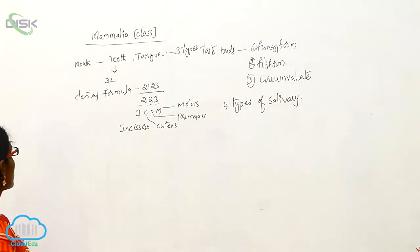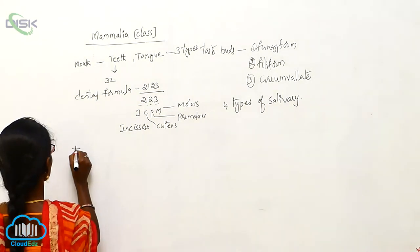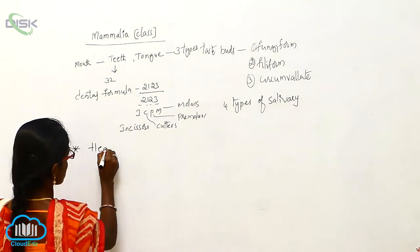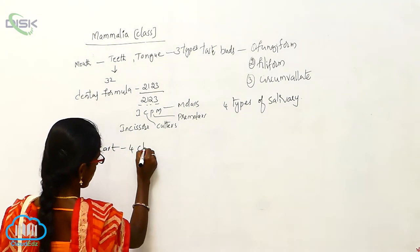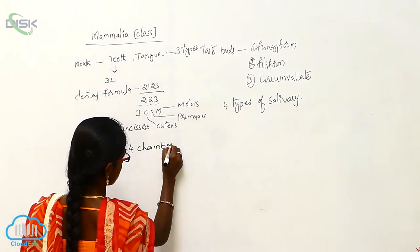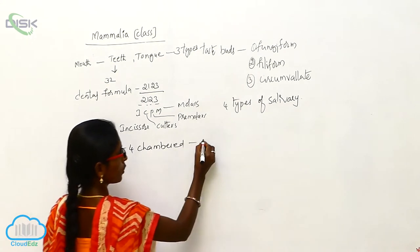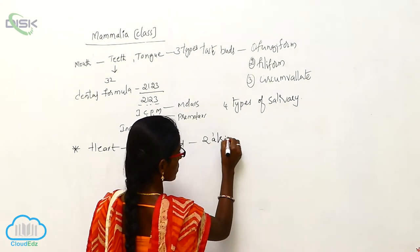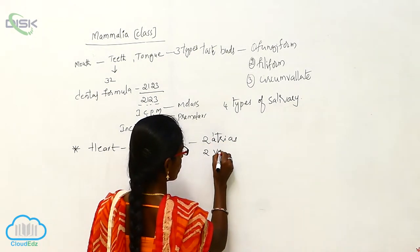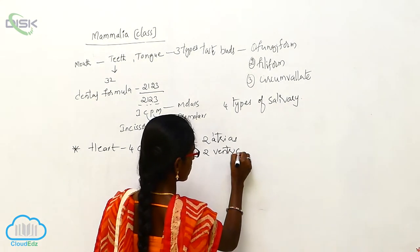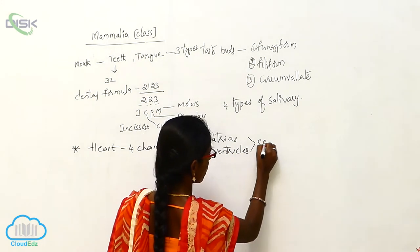The heart is four-chambered. Two atria, two ventricles are separated.